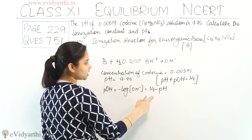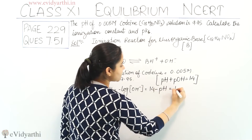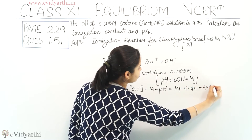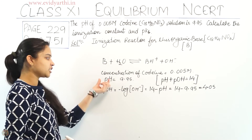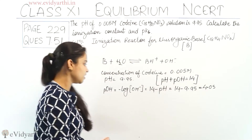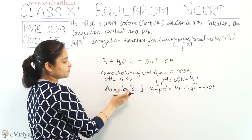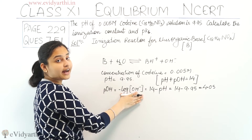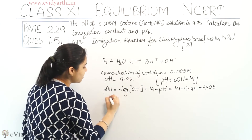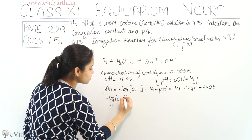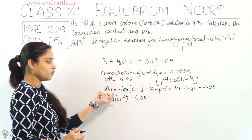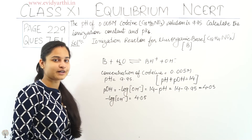pOH is equal to 14 minus pH. So pOH comes out to be 14 minus 9.95, which equals 4.05. The pOH value is equivalent to minus log of the hydroxide ion concentration.